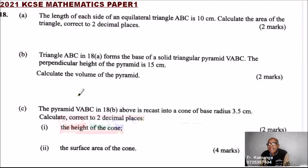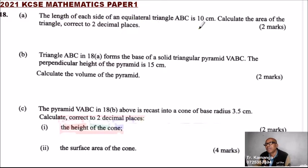Question number 18, Part A. The length of each side of an equilateral triangle ABC is 10 cm. Calculate the area of the triangle, correct to two decimal places.